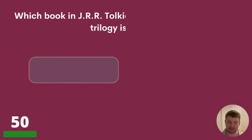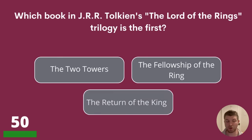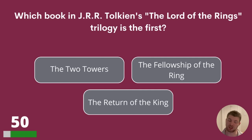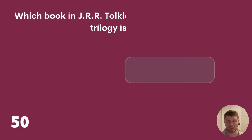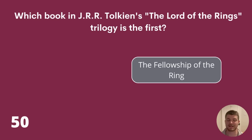Question 50. Which book in J.R.R. Tolkien's The Lord of the Rings trilogy is the first? The Two Towers, The Fellowship of the Ring, or The Return of the King? The answer is The Fellowship of the Ring.